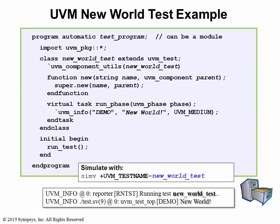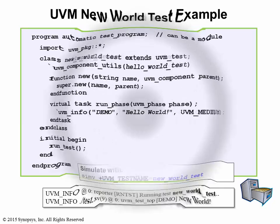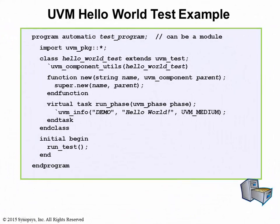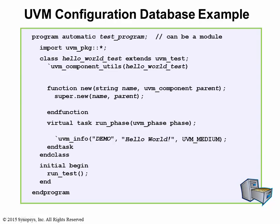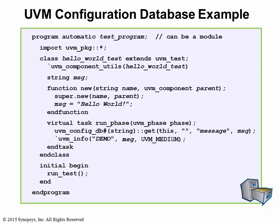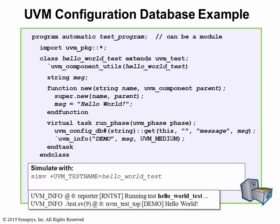For an example of the configuration database, let's go back to the original Hello World code. Instead of hard-coding the Hello World message, change the message to a string variable — in this example, the variable is called msg and initialized to Hello World. In the run phase, retrieve the message from the configuration database via a get method call. If there is no message in the database, the variable retains its original value, Hello World. Compiling and simulating with the same set of switches produces the same result.